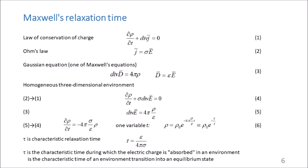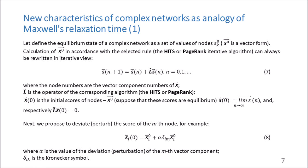Maxwell relaxation time is the characteristic time during which electric charge is absorbed in the environment. In an infinite homogeneous environment, the heterogeneity of the electric charge distribution is unstable. The system can go from an equilibrium state to a non-equilibrium state. Over time, the charge is absorbed, distributed evenly in the environment, and goes away to infinity. The Maxwell relaxation time is the characteristic time of the environment's transition into an equilibrium state. By analogy, we introduce the relaxation time of each node in the complex system.